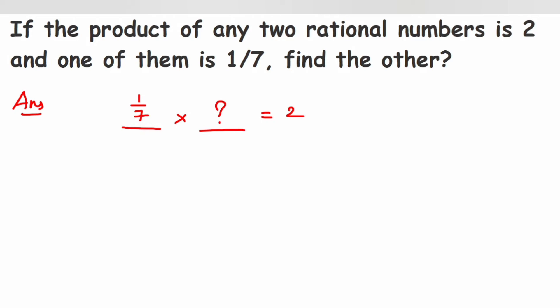We need to find what number gives 2 when multiplied by 1/7. So we frame it as: 1/7 × a = 2, where a is the unknown number. To find a, we transpose 7 to the other side — since 7 is in division, it becomes multiplication — giving us 1 × a = 2 × 7.